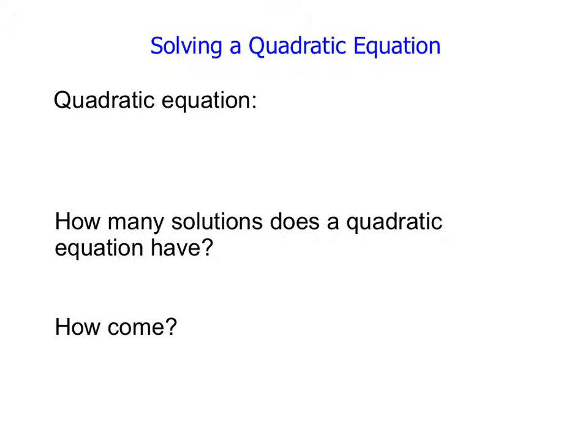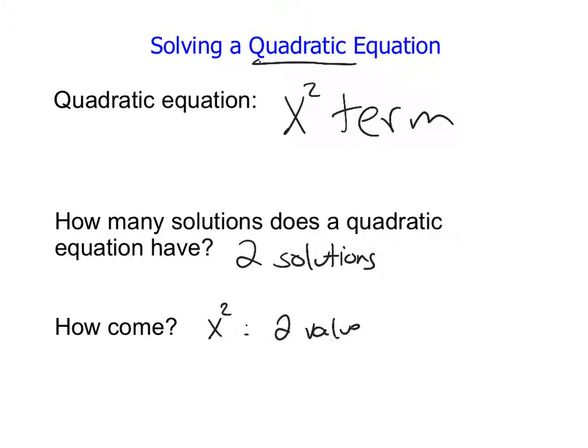Today we're going to talk about solving what's called a quadratic equation. So first of all, what is a quadratic equation? Well, it's an equation that contains an x-squared term. When we solve a quadratic equation, it's going to have a total of two solutions. And the reason why it has two solutions is because of that x-squared term. When we have an x-squared, there's two values that we can plug in for x that would give the same answer.